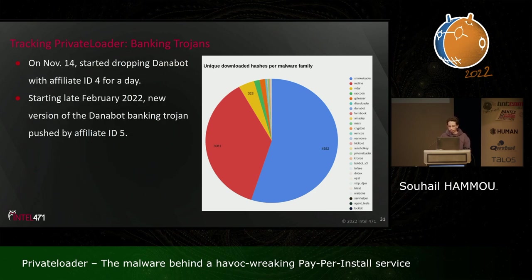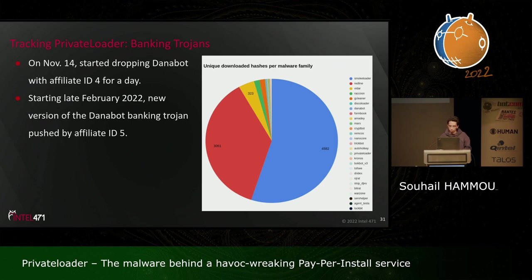A few days later on November 14th, we saw Private Loader dropping Danabot with affiliate ID 4, again for a single day. But starting late February 2022, the new version of Danabot belonging to affiliate ID 5 started being delivered through Private Loader in very large amounts and is apparently still in use, suggesting they consider it a main distribution method for their banking Trojan.